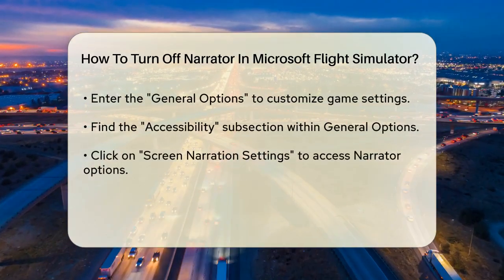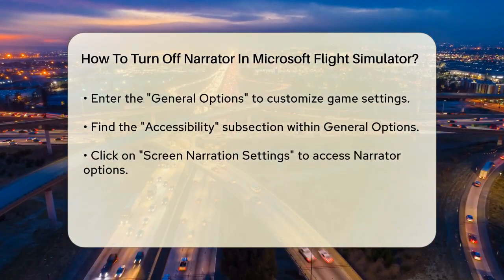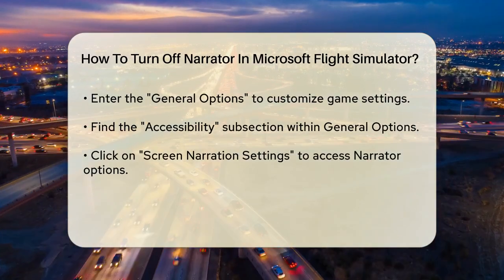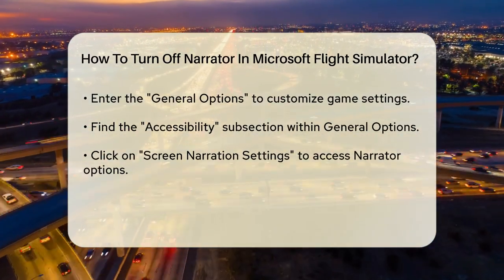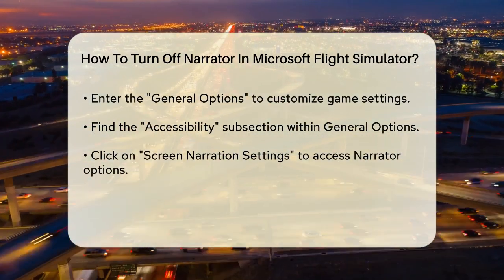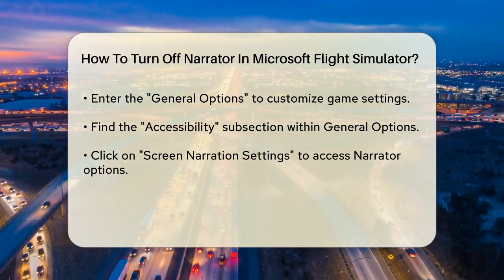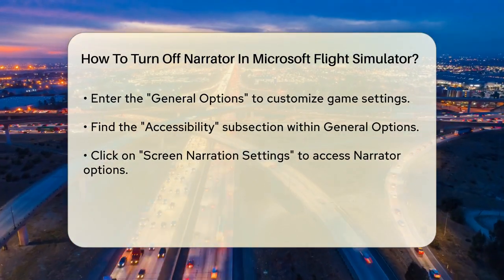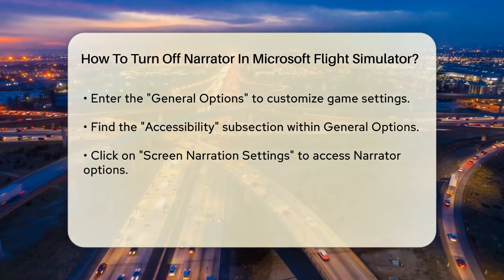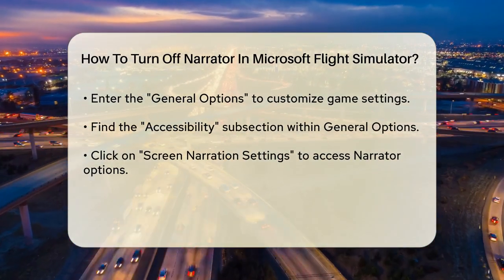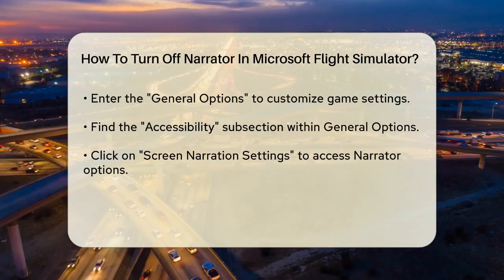Once you're in the Options menu, look for General Options. This is where you can tweak various settings to customize your gaming experience. Inside the General Options, there's a subsection called Accessibility.